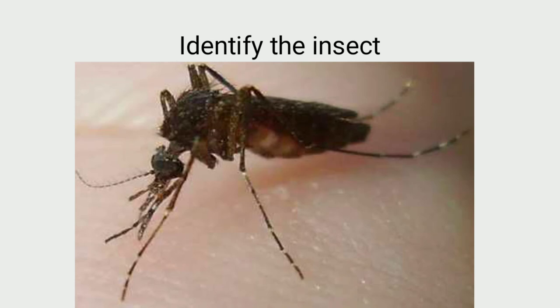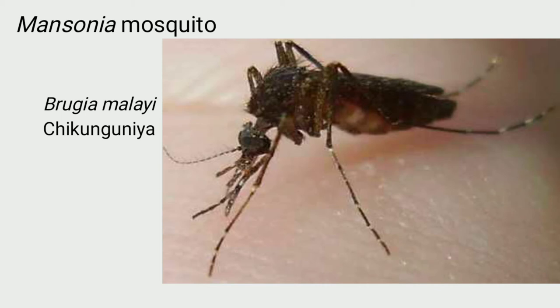Identify the insect: This is Mansonia mosquito. It transmits Brugia malayi and chikungunya.